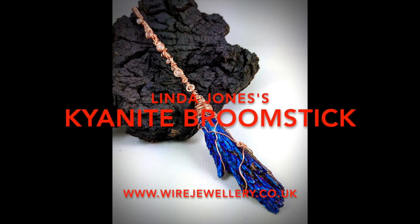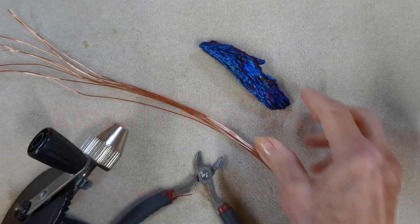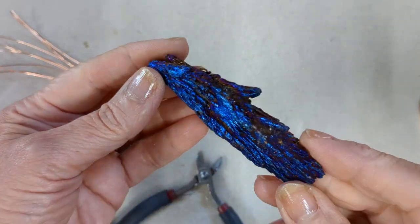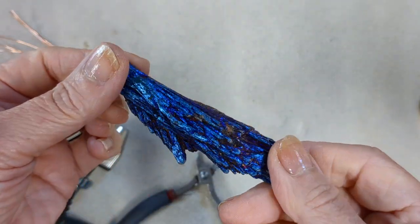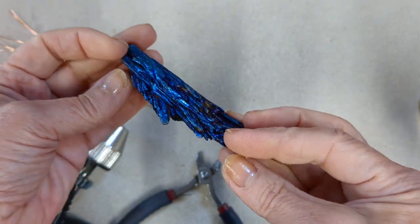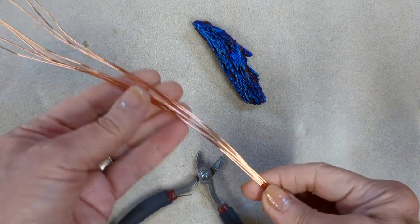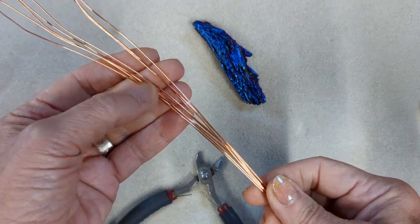Here's a fun witchy project. It's a piece of kyanite which is normally black but has been electroplated in this gorgeous blue. It's from Chalmers Gems and they've asked me to create it for a Halloween project for a broomstick.